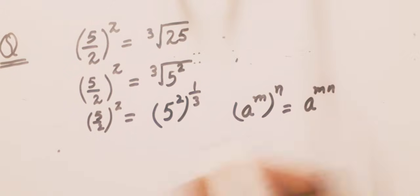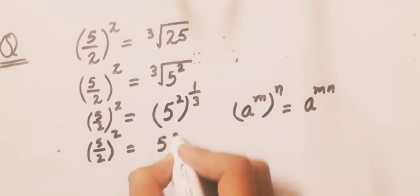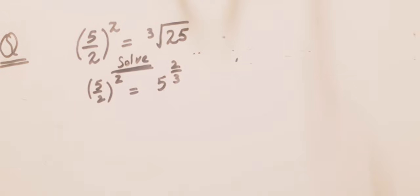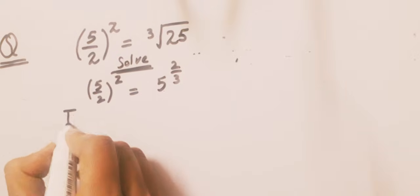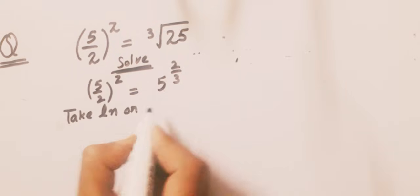So we have (5/2)^z = 5^(2/3) when we multiply 2 times 1/3, it becomes 2/3. Now we will take the natural logarithm on both sides.